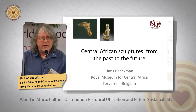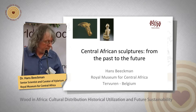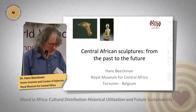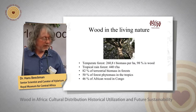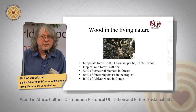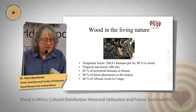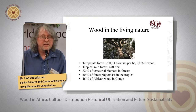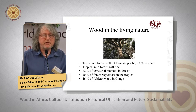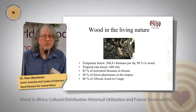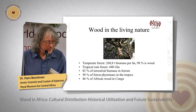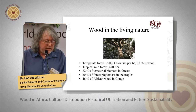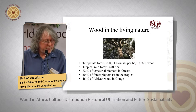I will talk about old ethnographic objects and one single very old ethnographic object. The origin of African sculptures is of course the forest. The biggest part of the material culture in Central Africa consists of wooden sculptures, and there are many reasons to choose wood for establishing the material culture.